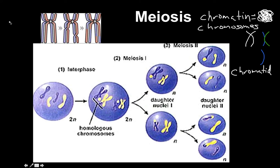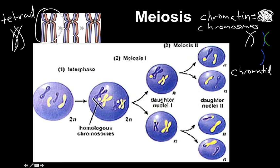The last vocabulary term we need before moving on is tetrad. A tetrad is two homologous — or two of the same — chromosomes connected together and stacked on top of each other, like what we see here. Now that we've got the vocab out of the way, let's get going.